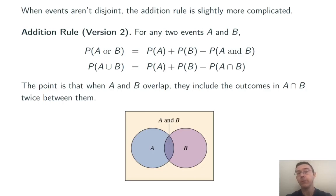The point is that whenever A and B overlap, they include outcomes that are in A intersect B twice. Once when they're in A, once when they're in B. So we want to subtract off those outcomes. Subtract off that probability.